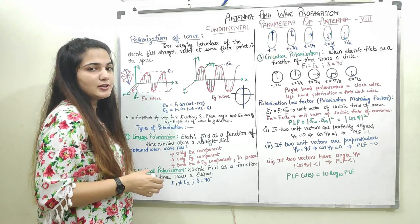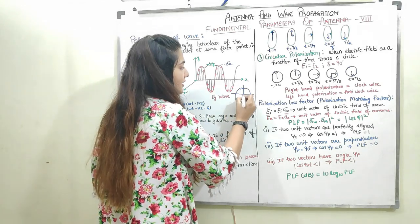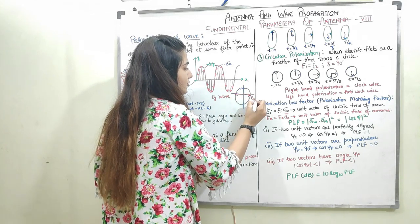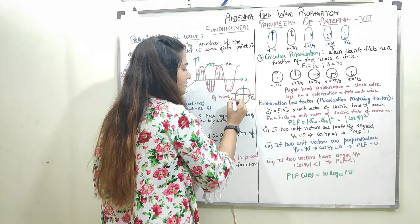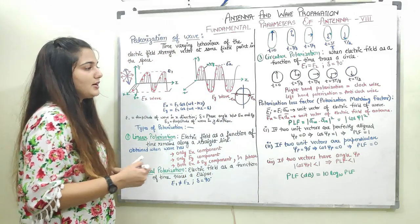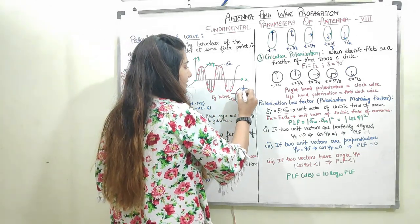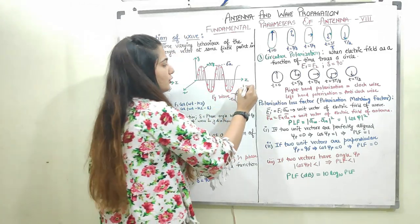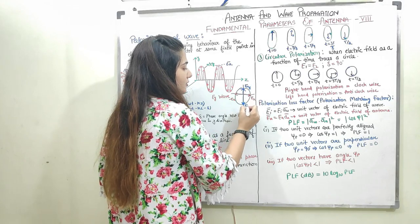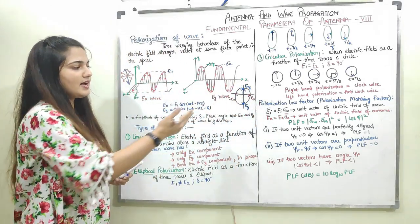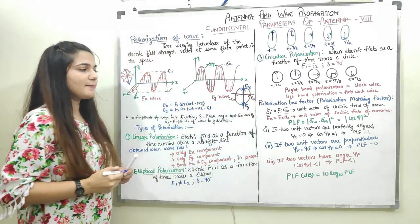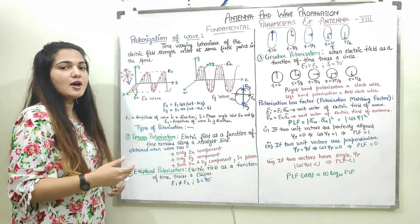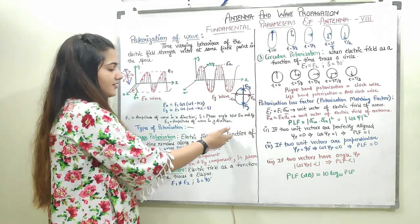In linear polarization, if I have only the Ex component, it will oscillate between the positive and negative x direction. Similarly, if it has a y component, it will oscillate between the positive and negative y direction. The electric field as a function of time remains along a straight line only.